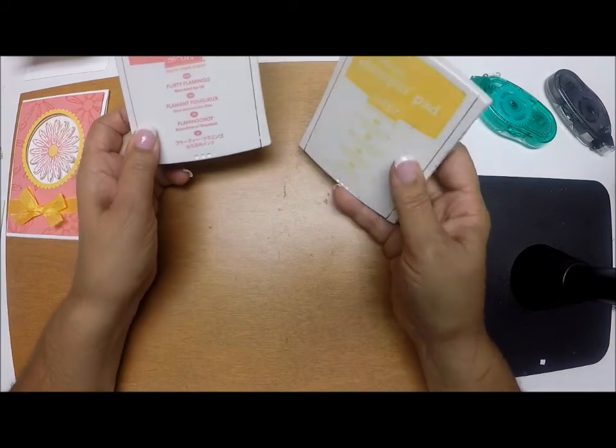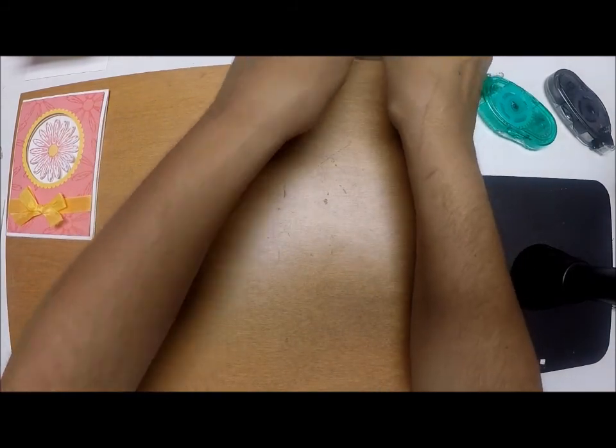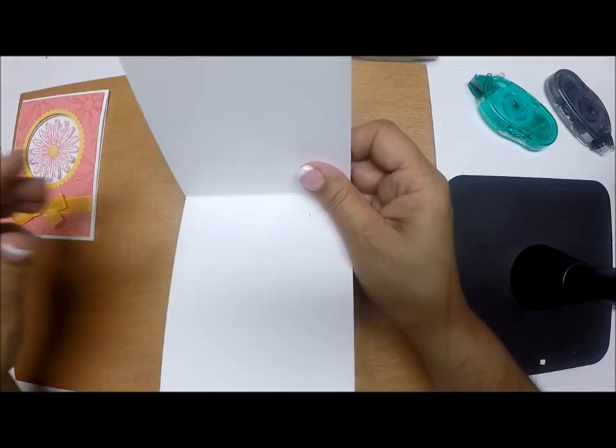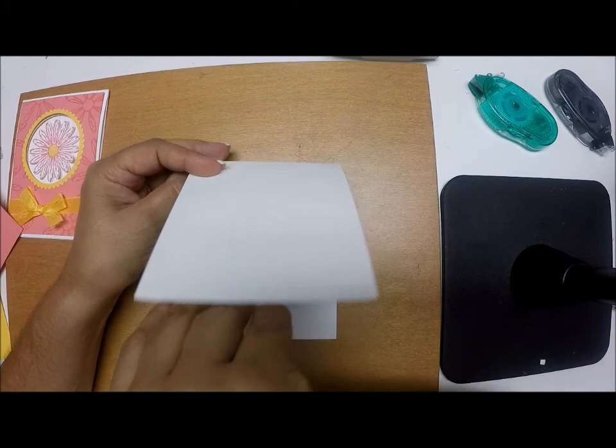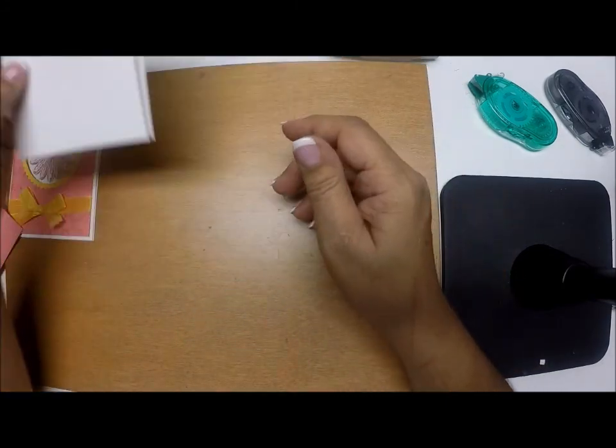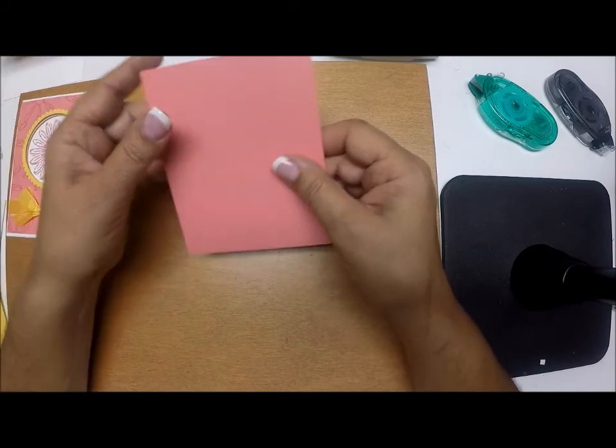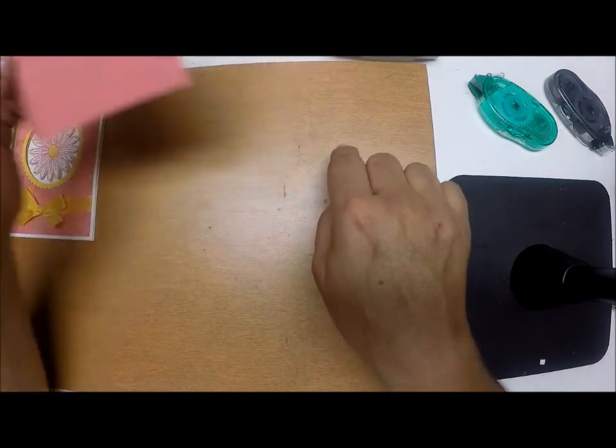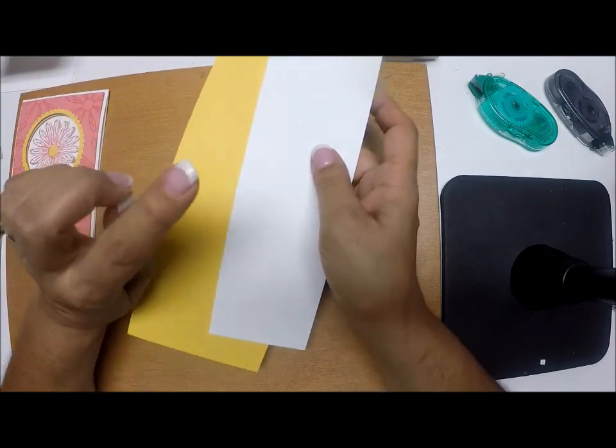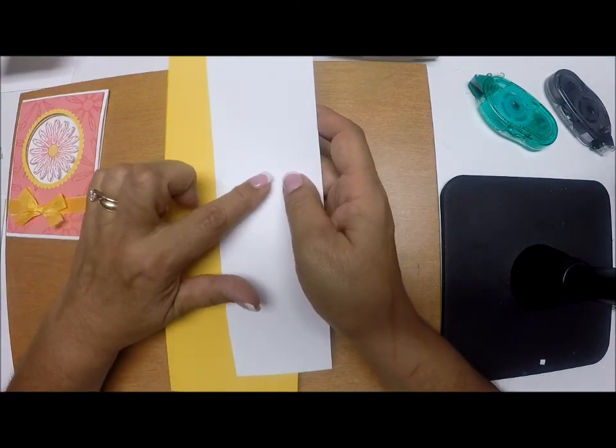For inks, we're going to use Flirty Flamingo and Daffodil Delight. For paper, we're going to use some Thick Whisper White because that's going to be our card base - four and a quarter by eleven, scored at five and a half. We have some Flirty Flamingo, four by five and a quarter, and we have some Daffodil Delight and Whisper White.